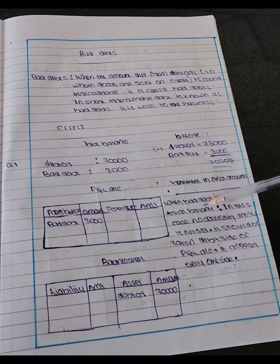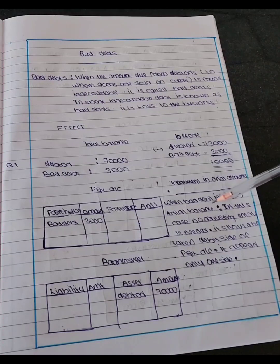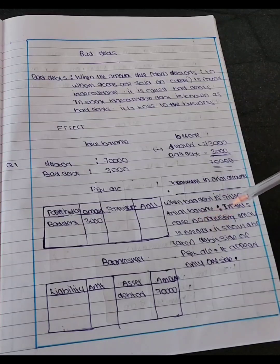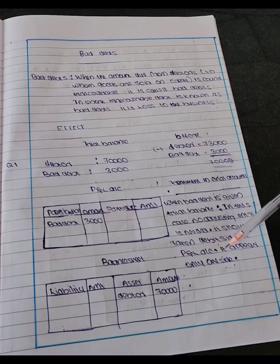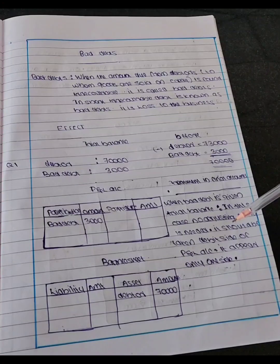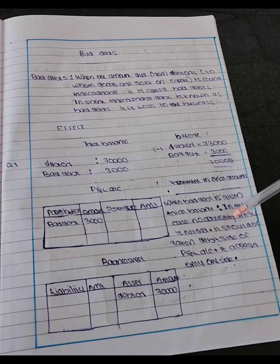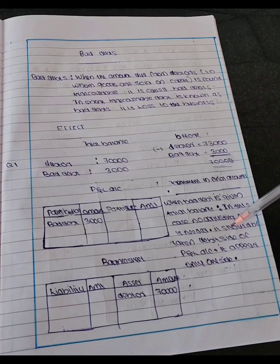When a bad debt is given in the trial balance, there is no adjusting entry. It should be taken to the debit side of the P&L account — it appears only on one side. In the trial balance there will be a bad debt. We should take it to the debit side of P&L. With that, we will account for any bad debt.